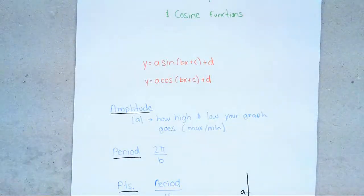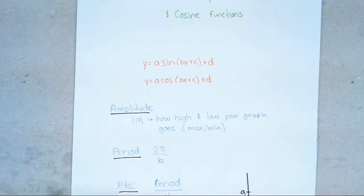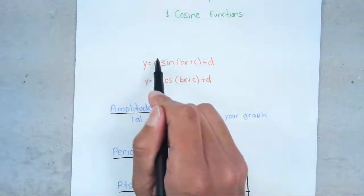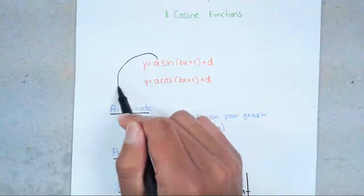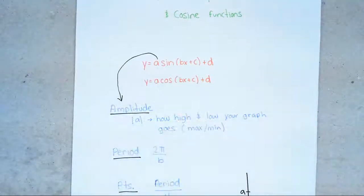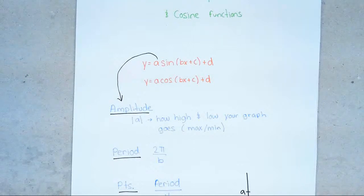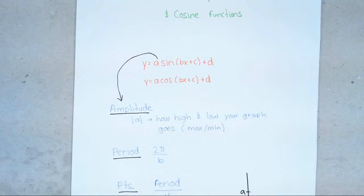The most important thing you want to know is this A right here. This A is considered your amplitude. Whatever number that is, it's always an absolute value, and that's going to tell you how high and how low your graph actually goes. It's also going to tell you the highest and lowest point — meaning those are your max and mins.